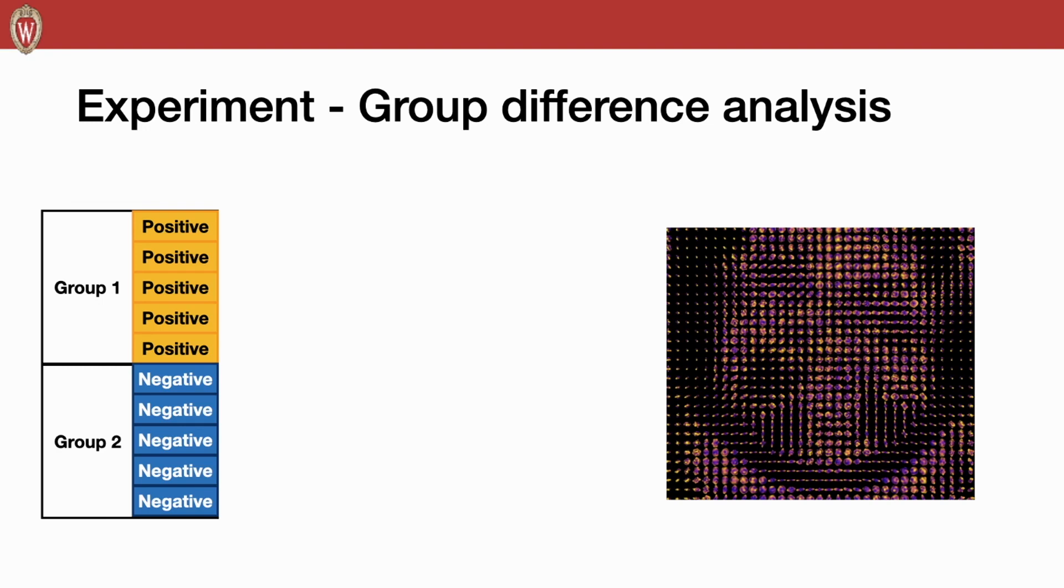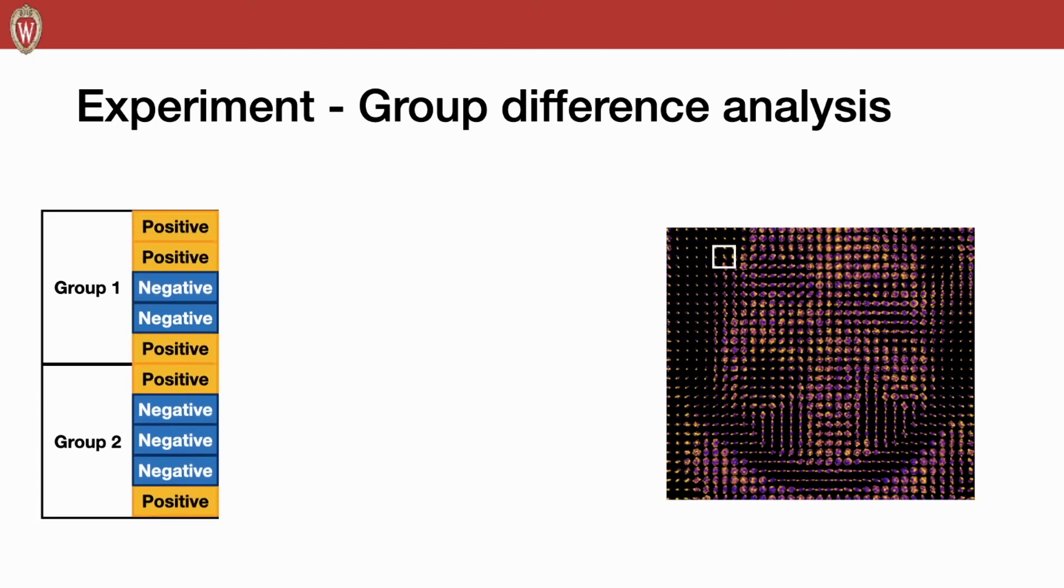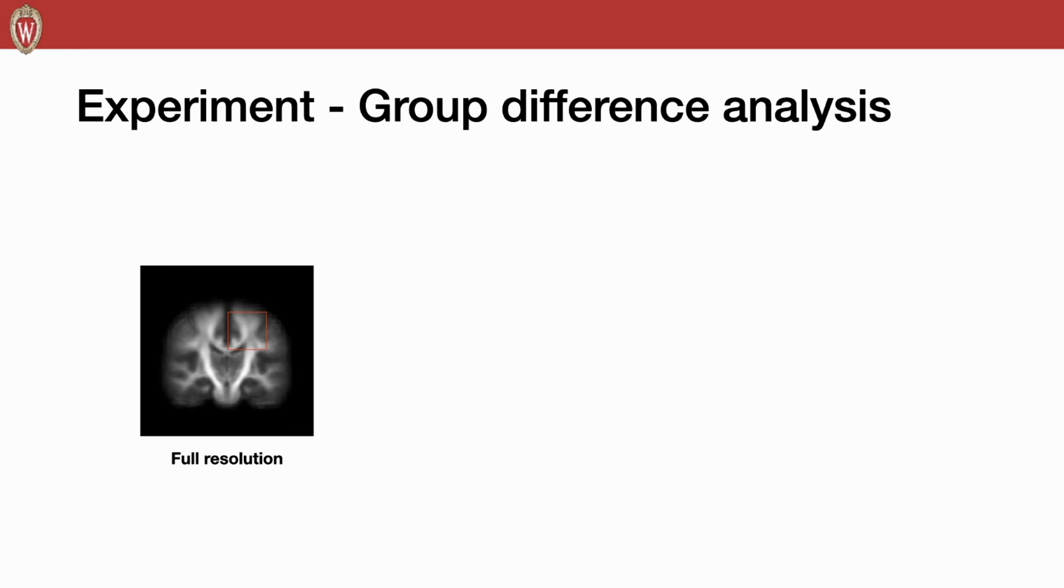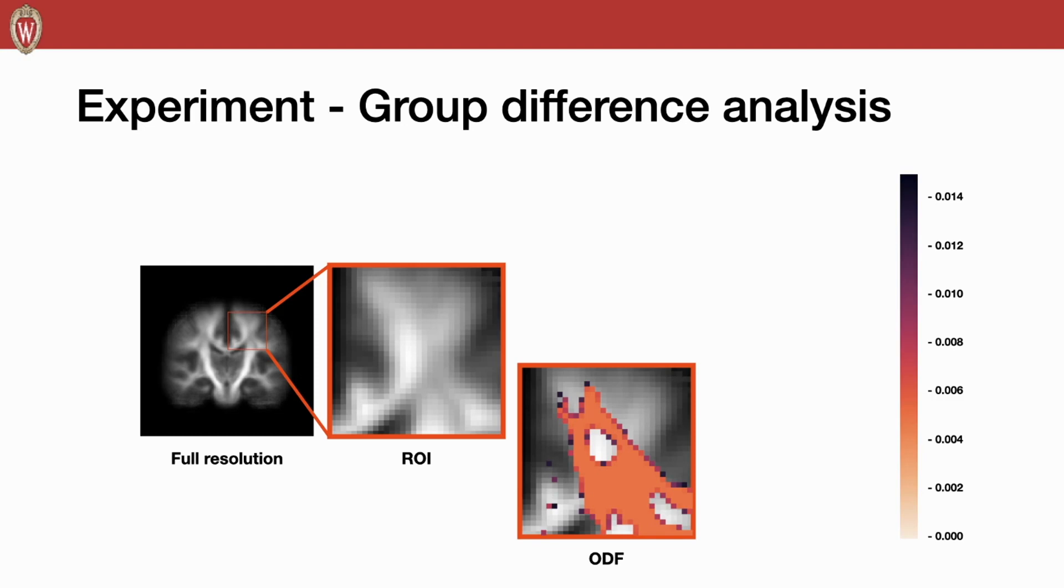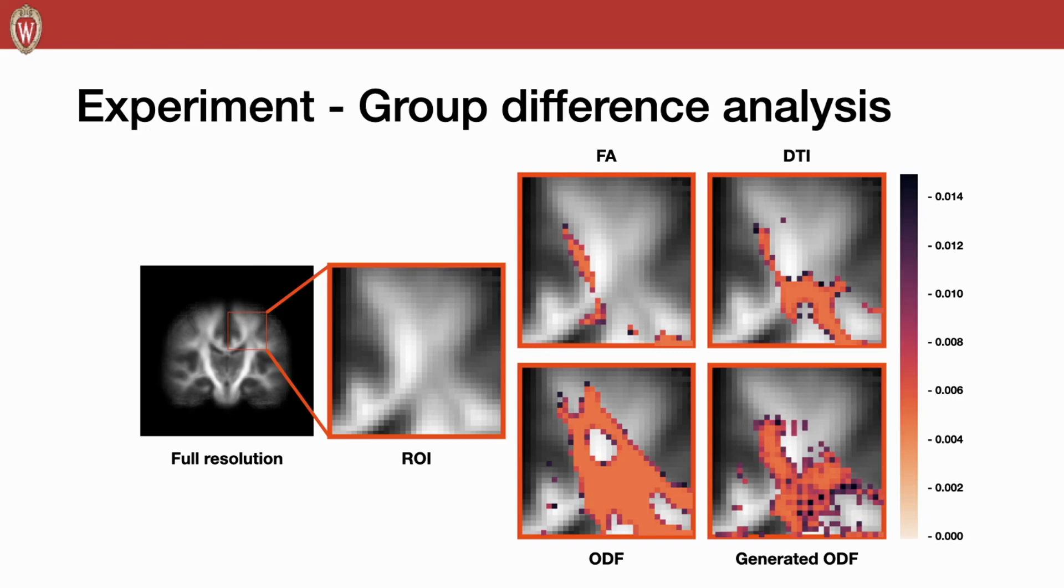Also, to verify if our method can preserve the difference between groups, we apply the permutation testing on each voxel. We first compute the distance between two means of the group and permute the samples to have the distribution of the distance. If the original distance appears to be in the extreme part, the voxel is believed to be different between groups. Then we apply the same test on different voxels one by one. As shown here, the ODF performs as the ground truth. The color highlights the group-wise different voxels. Compared with the FA and the input DTI, our method can preserve the group-wise difference for the generated ODF.